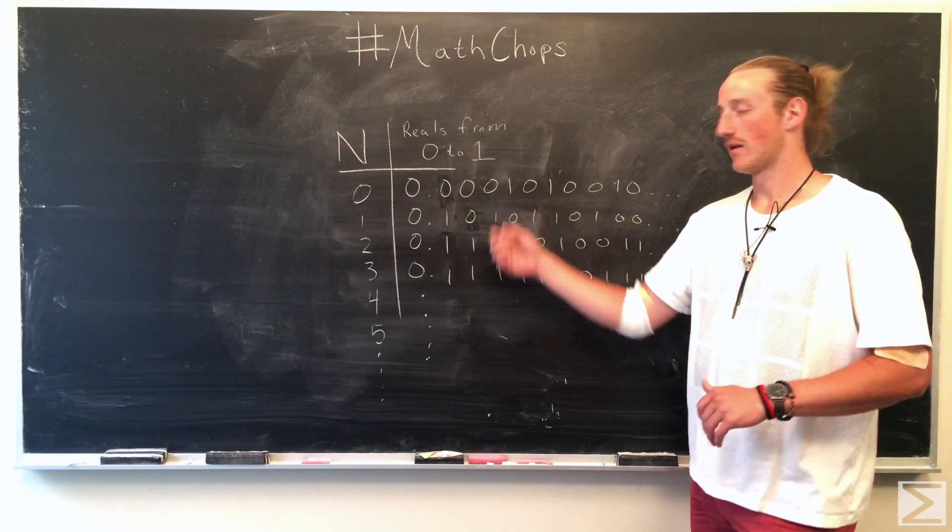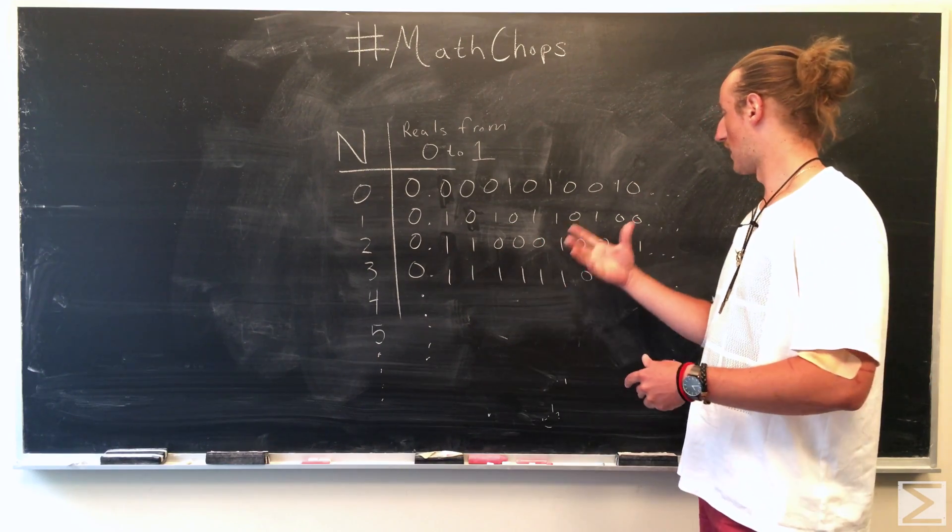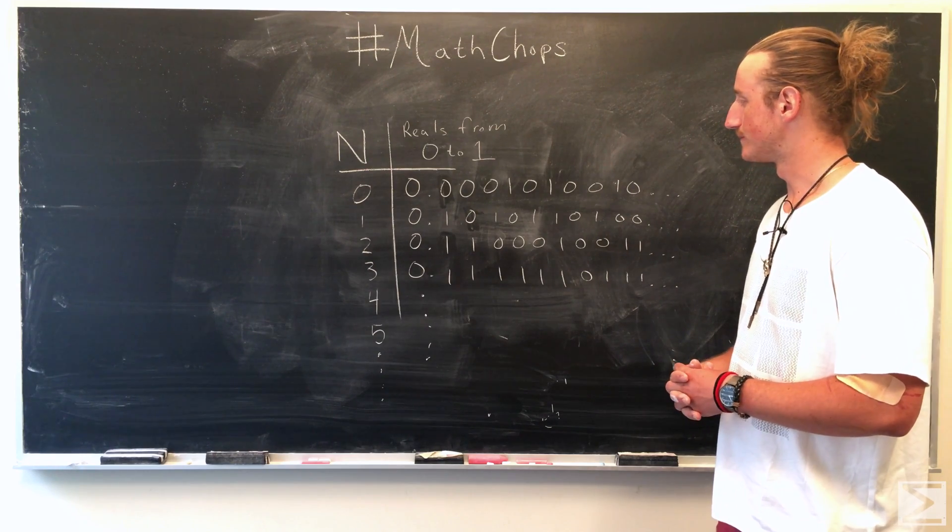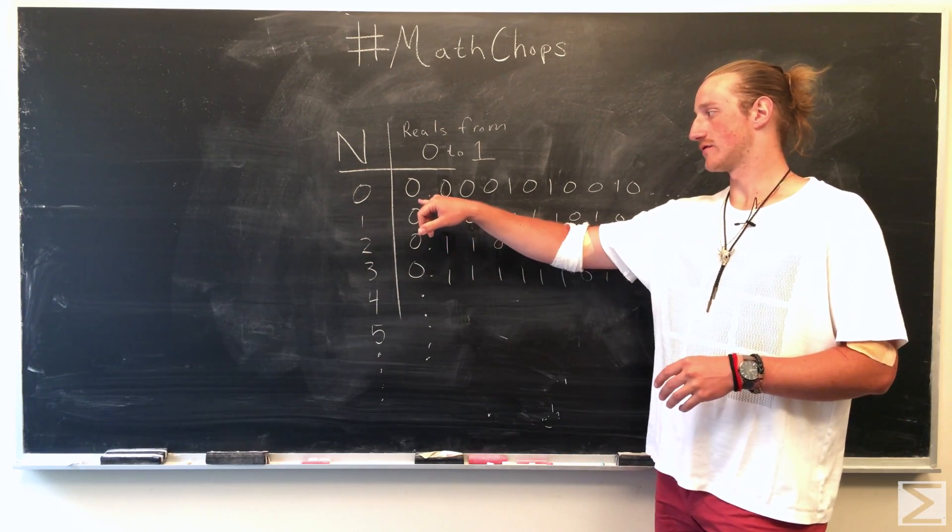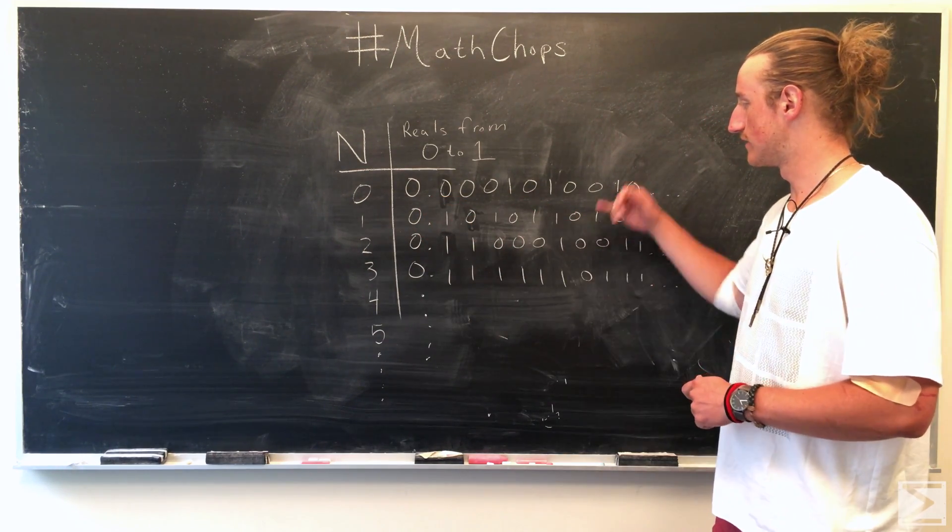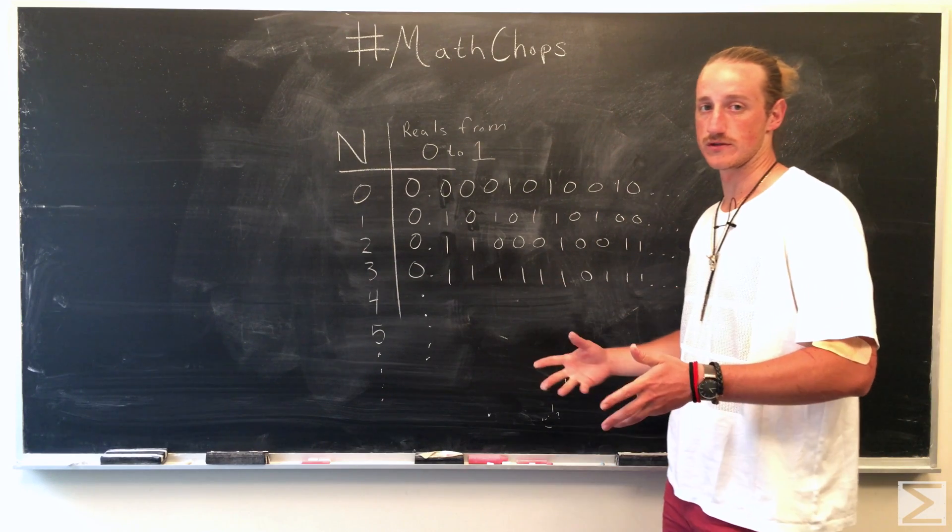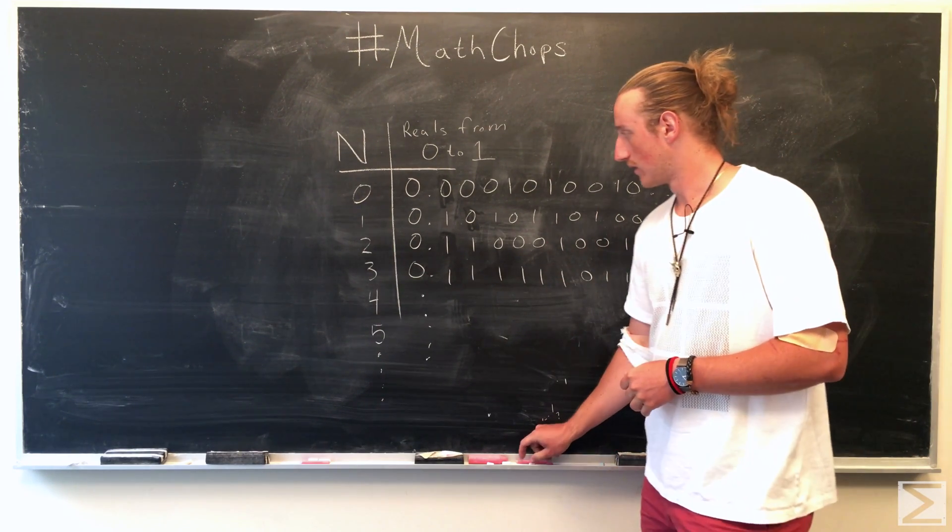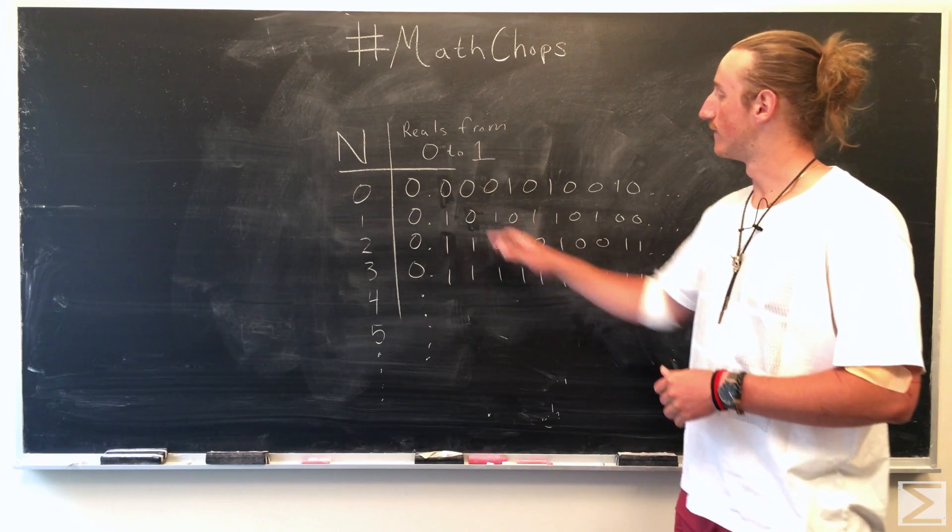So looking at these numbers, these are real numbers. They are on the number line in between zero and one. And then what Cantor did was he looked at each of these numbers. These are just arbitrary numbers using zeros and ones as decimals. He looked at the diagonal of these numbers.